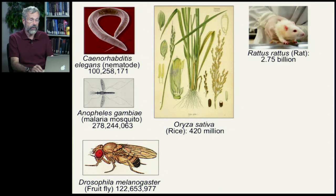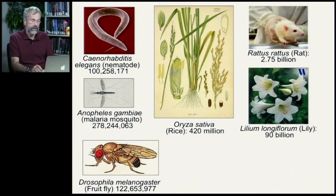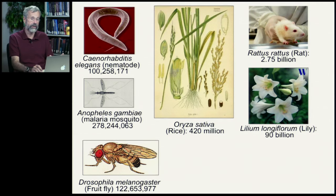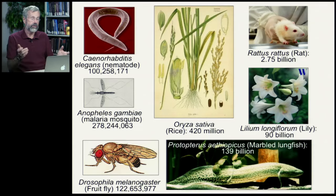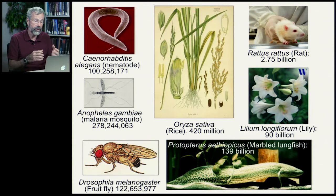A lab rat has nearly 3 billion base pairs — quite a lot more than a plant. But then there are some plants with huge genomes. Here's a lily with 90 billion base pairs in its genome. And here's a marbled lungfish, which is the all-time winner — the biggest genome anybody's seen so far: 139 billion base pairs.